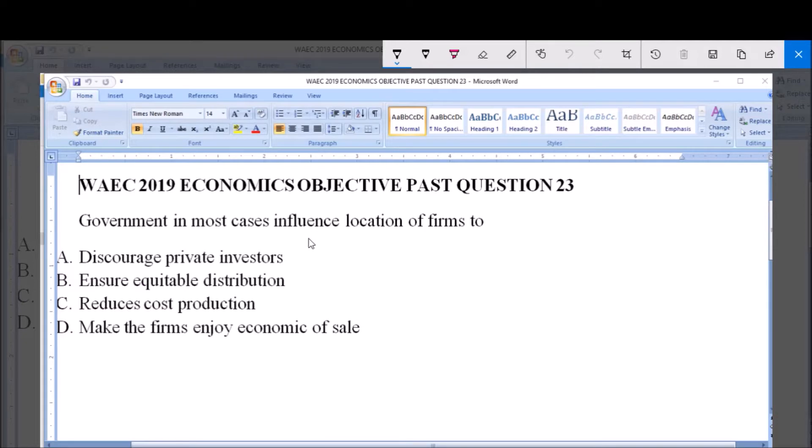So you have basically been asked for the reason why the government will want to influence location of firms. Now, governments may want to influence location of firms for their own profit or benefit, but aside that, or primarily, or in most cases as the question implies...